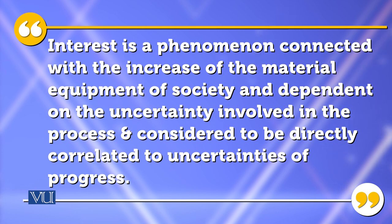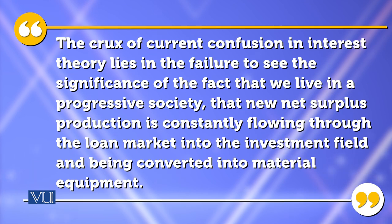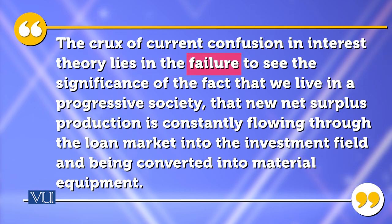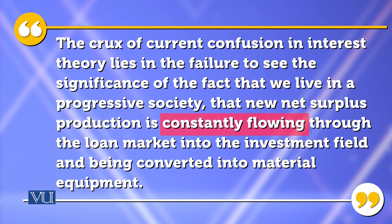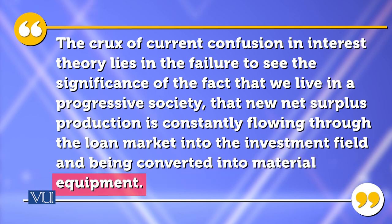So the direction has been explained within the social aspect of uncertainties. The first crux that creates confusion is the theory — then there is failure, then significant facts, then the progressive fact, then surplus production, then constant flow, then material flow and loan market, then material equipment. When you take the result of all these, your total result develops.